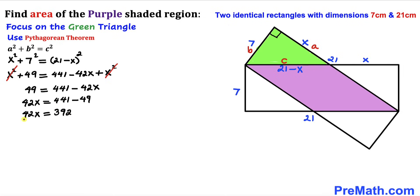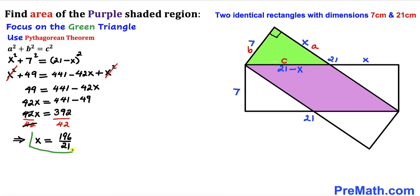Let's isolate x by dividing both sides by 42. The 42s cancel, giving us x equals 392 over 42, which reduces to 196 divided by 21. So our x value turns out to be 196/21 centimeters.